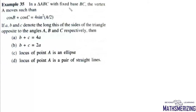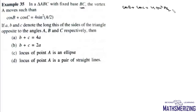The question says: in a triangle ABC with fixed base BC, the vertex A moves such that cos B + cos C = 4 sin²(A/2). If a, b, c denote the sides of this triangle opposite to angles A, B, and C, then which of the following options is correct?